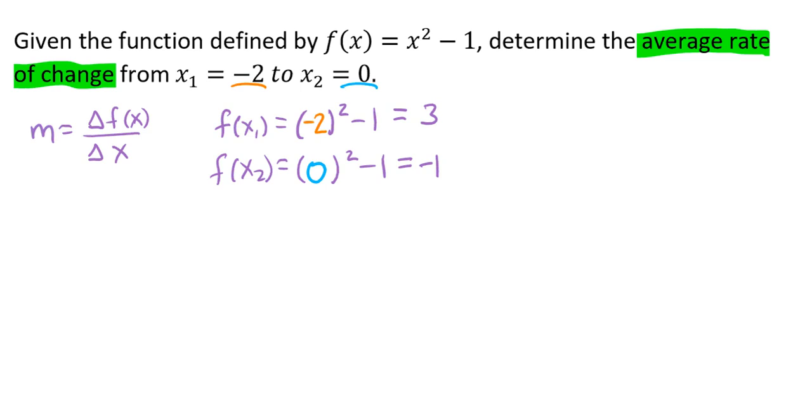And we can now use this in our equation. So we're finding our average slope, or that rate of change, and so now we're going to have -1 minus 3 over 0 minus -2.